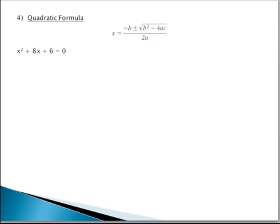Another way — the fourth way — to solve a quadratic equation is using the quadratic formula. Your equation must be in standard form, ax squared plus bx plus c equals 0, before you can use it. You simply identify a, b, and c and substitute them into the formula. In this particular problem, a is 1, b is 8, and c is 6.